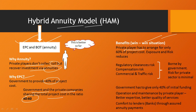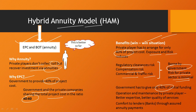This is a win-win situation for both private players and the government. The private player has to arrange only 60% of the project cost, meaning exposure and risk are reduced. All regulatory clearances risk, compensation risk, and commercial and traffic risk are borne by the government, making risk for the private sector minimal. The government has to provide only 40% of the initial funding, while operation and maintenance is handled by the private player, ensuring better expertise and quality of services. Additionally, there is comfort to lenders — that is, banks — through assured annuity payments.